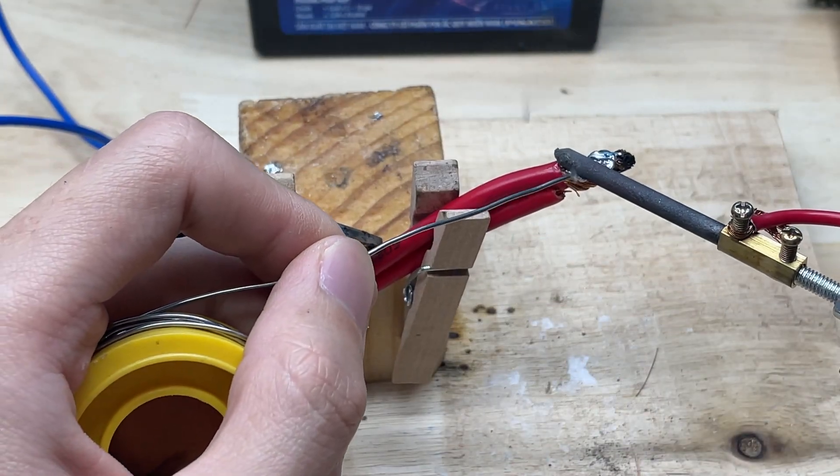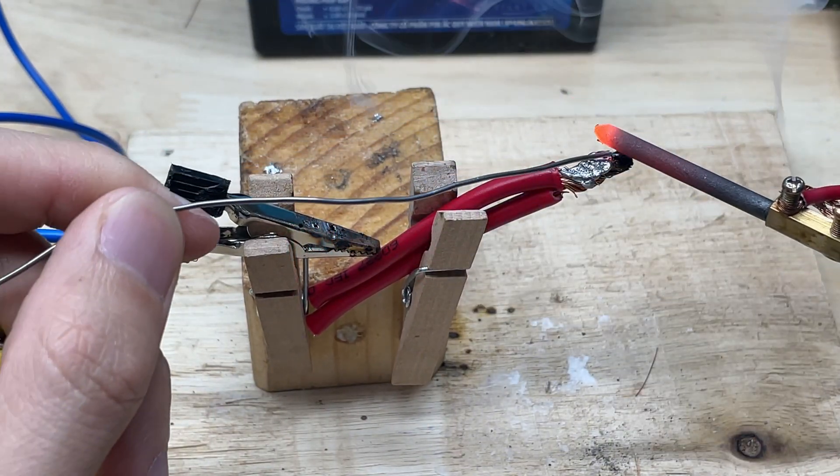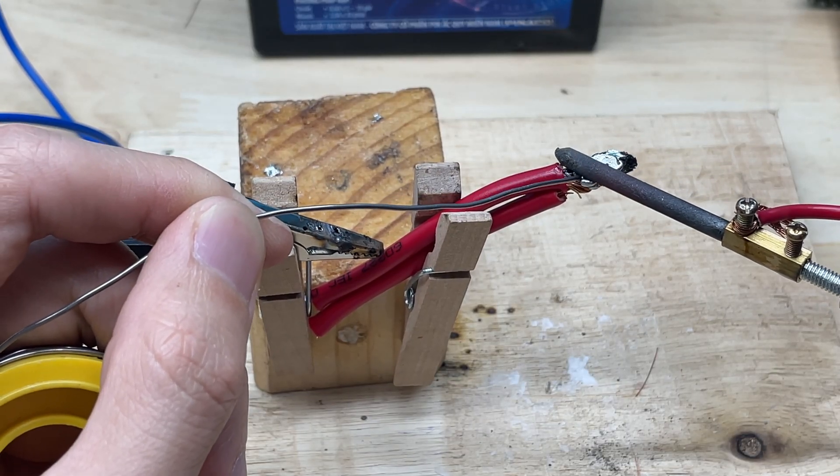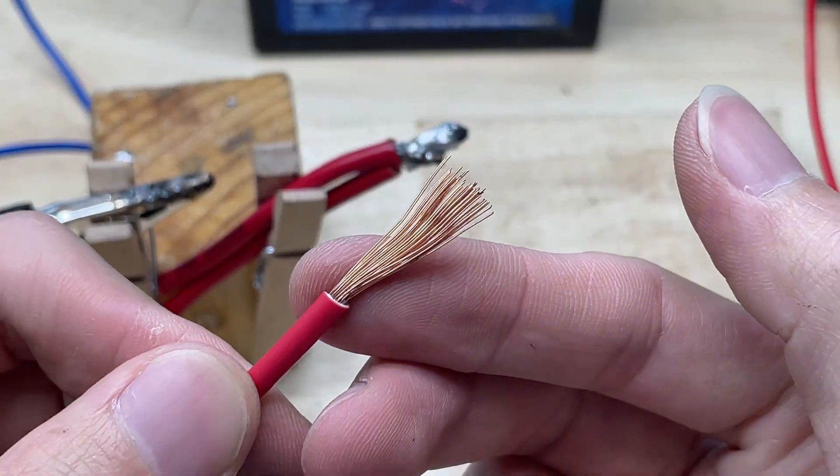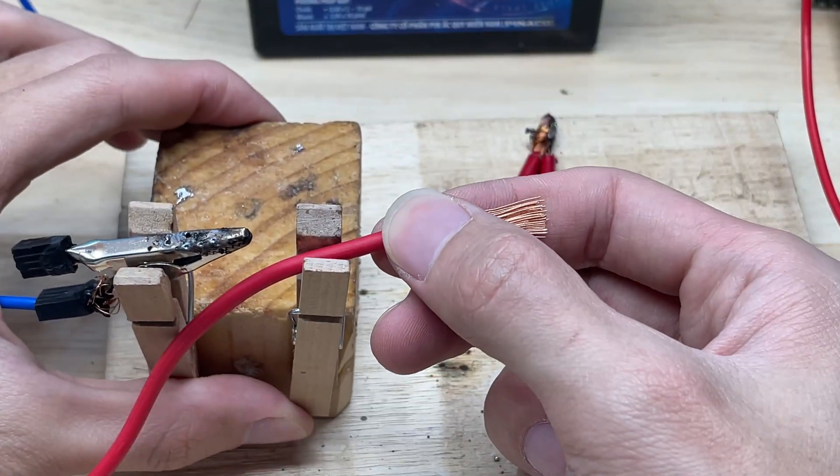When soldering the joint, the solder adheres very well to the wire, almost fully coating the copper strands inside. Thanks to the welding tip maintaining a stable and focused heat, the solder flows evenly without clumping or spilling out. Once cooled, the joint becomes solid, durable, and conducts electricity effectively, ensuring a stable connection while also looking neat and professional.